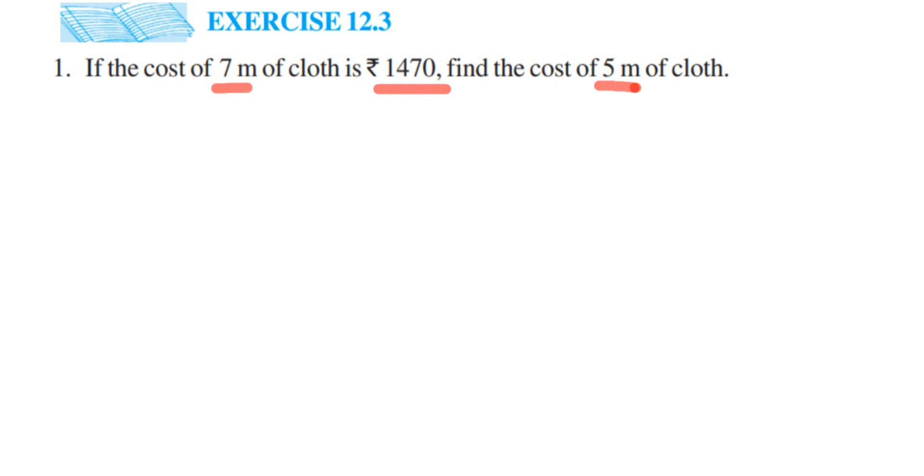They've given the cost of 7 meters of cloth, so we're going to find out the cost of 1 meter first. Once I know the 1 meter cloth cost, I can find the 5 meter cost by multiplying by 5.